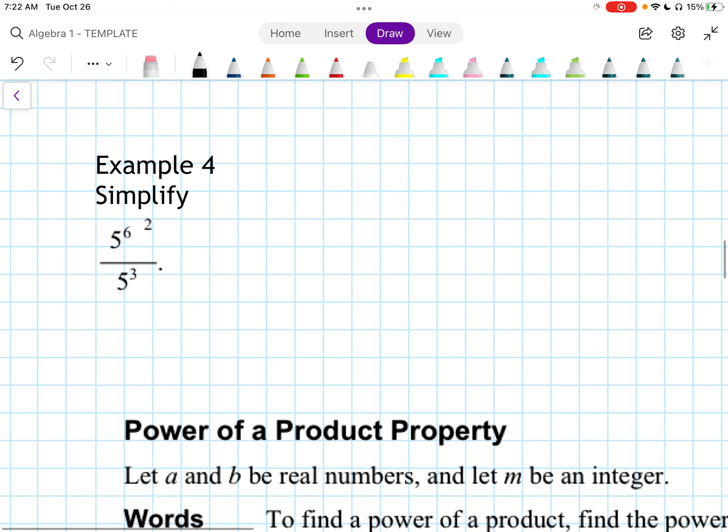In example 4, this is 5 to the 6th with parentheses around it squared over 5 to the 3rd. The parentheses up top should tell us, oh, we have to multiply here. So this is going to be 5 to the 12th over 5 to the 3rd. And then we have 5 to the 12th minus 3. We can subtract that bottom piece, which would be 5 to the 9th.